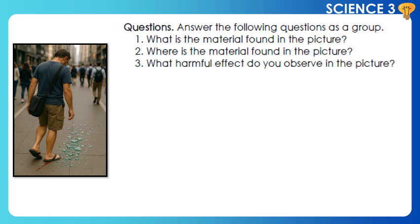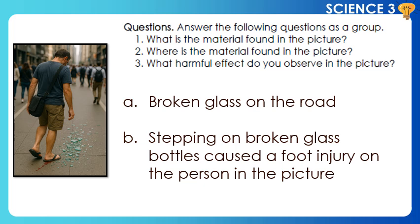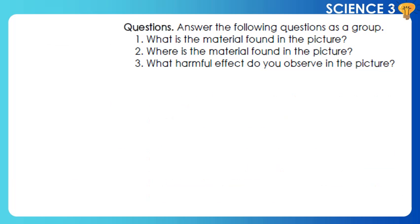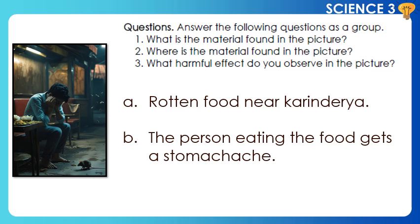Answer the following questions as a group. 1. What is the material found in the picture? 2. Where is the material found in the picture? 3. What harmful effect do you observe in the picture? Broken glass on the road — stepping on broken glass bottles caused a foot injury on the person in the picture. 4. Bent and crumpled plastic bottle on the beach side — stepping on a bent and crumpled plastic bottle caused a foot injury on the person in the picture.